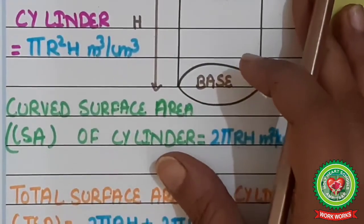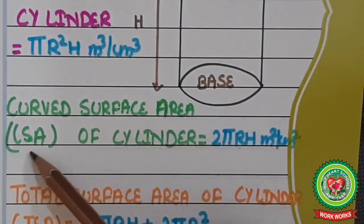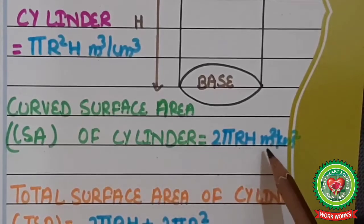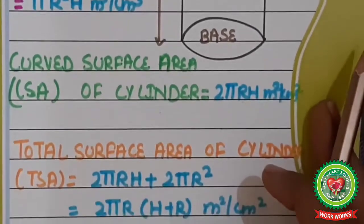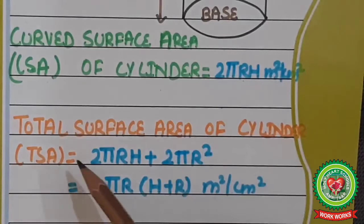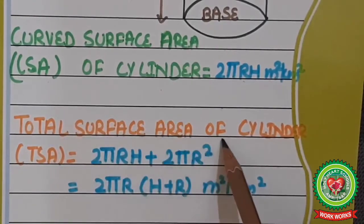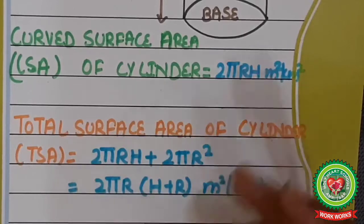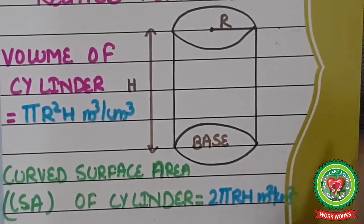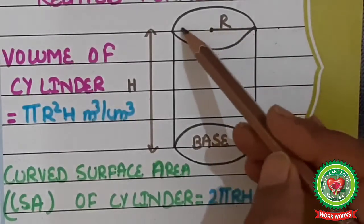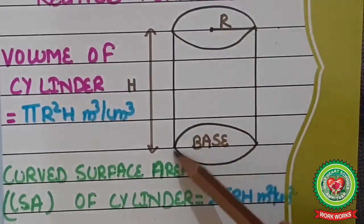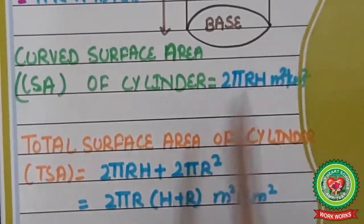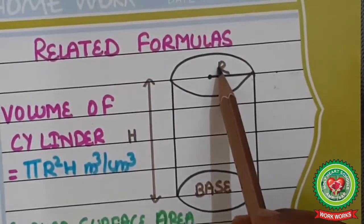The next formula related to cylinder is curved surface area, or CSA. After that, we have the total surface area, or TSA. The total surface area equals the curved surface area plus the area of the top and bottom circles. The curved surface area is 2πrh, so the total surface area is 2πrh plus the area of two circles.